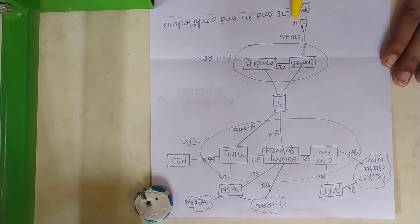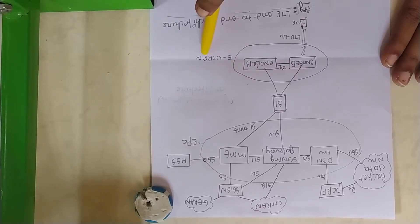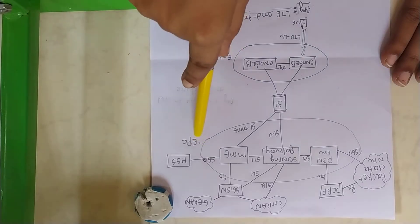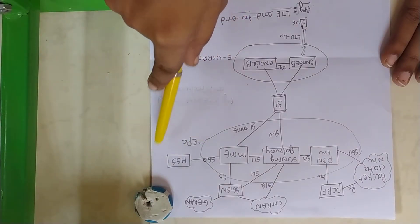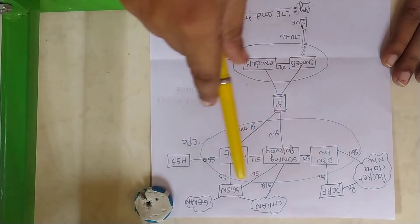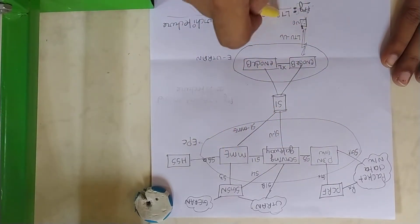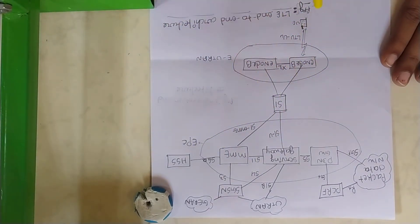UE is User Equipment. EUTRAN is Enhanced UMTS Terrestrial Radio Access Network or Evolved UTRAN. EPC is Evolved Packet Core. So it mainly consists of these three elements.